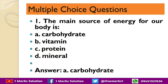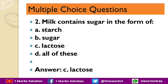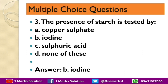The first question: the main source of energy for our body is — carbohydrate, vitamin, protein, or mineral? The correct answer is carbohydrate. The second question: milk contains sugar in the form of — starch, sugar, lactose, or all of these? The correct answer is C, lactose.